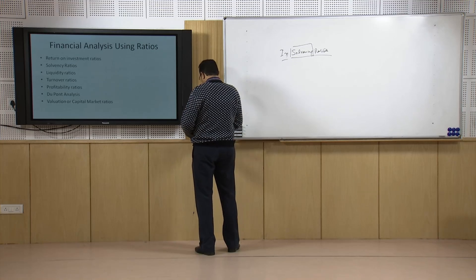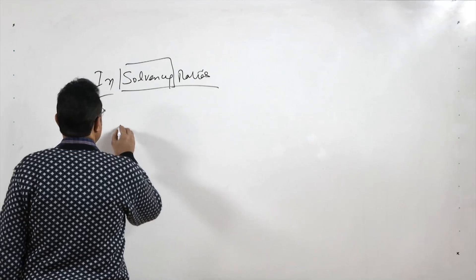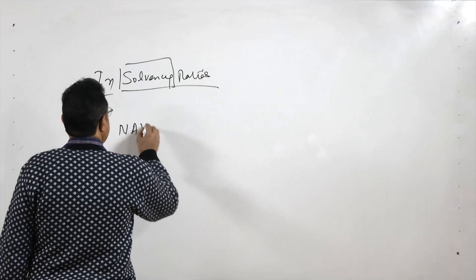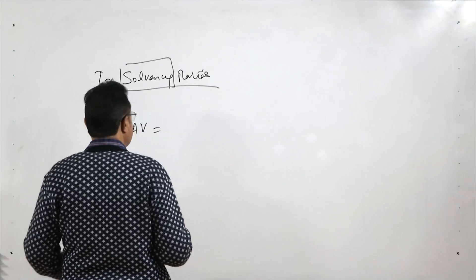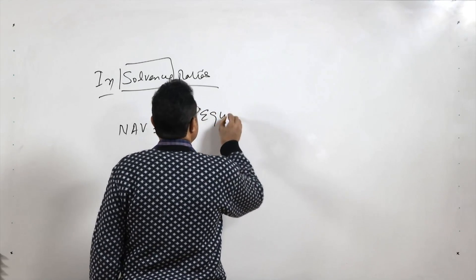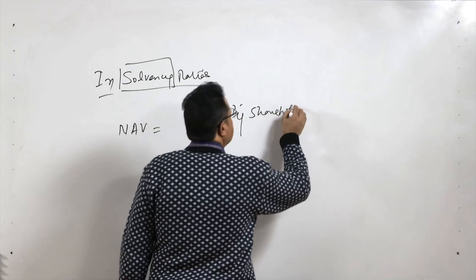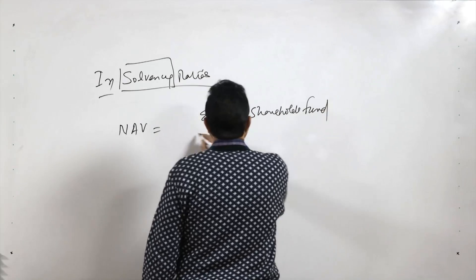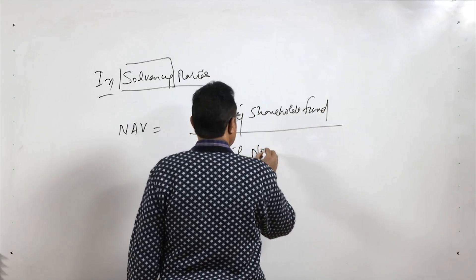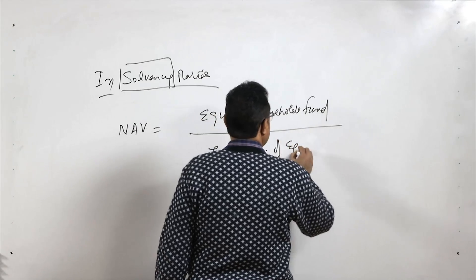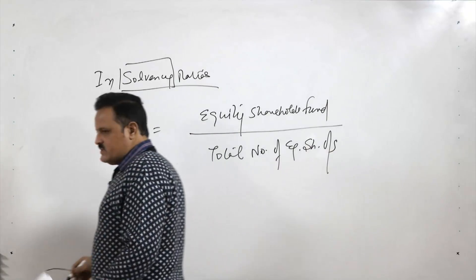The first solvency ratio we are going to calculate is NAV — Net Asset Value. NAV equals equity shareholders' fund divided by the total number of equity shares outstanding.